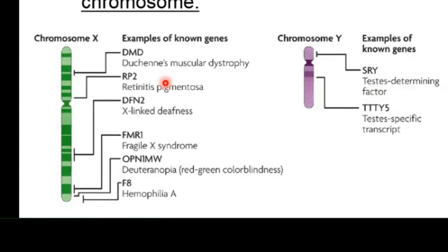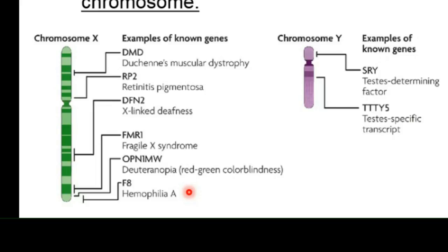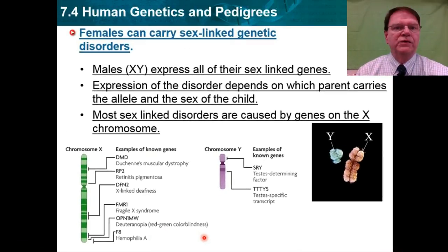Over here on the left, you can see some examples. Muscular dystrophy, retinitis pigmentosa, color blindness — red-green color blindness — is more typically observed in males than in females. Another illness known as hemophilia is a blood disorder that makes it very difficult for people to have blood clotting. When they cut themselves, they continue to bleed out, and that's more commonly observed in males than in females.